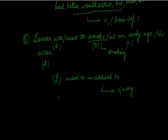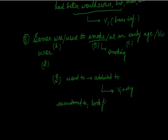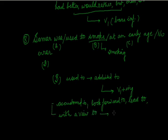Some phrases using 'to' sometimes take V1+ing instead of V1. Generally, 'to' takes V1 in 99% of cases, but in certain phrases it takes gerund instead. Other such phrases: 'accustomed to', 'look forward to', 'lead to', 'with a view to' — these phrases will take V1+ing or gerund.